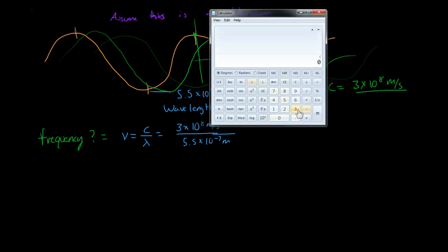So what do we get? We get 3 times 10 to the power of 8, and this is all divided by 5.5 times 10 to the power of negative 7, right? Yes.